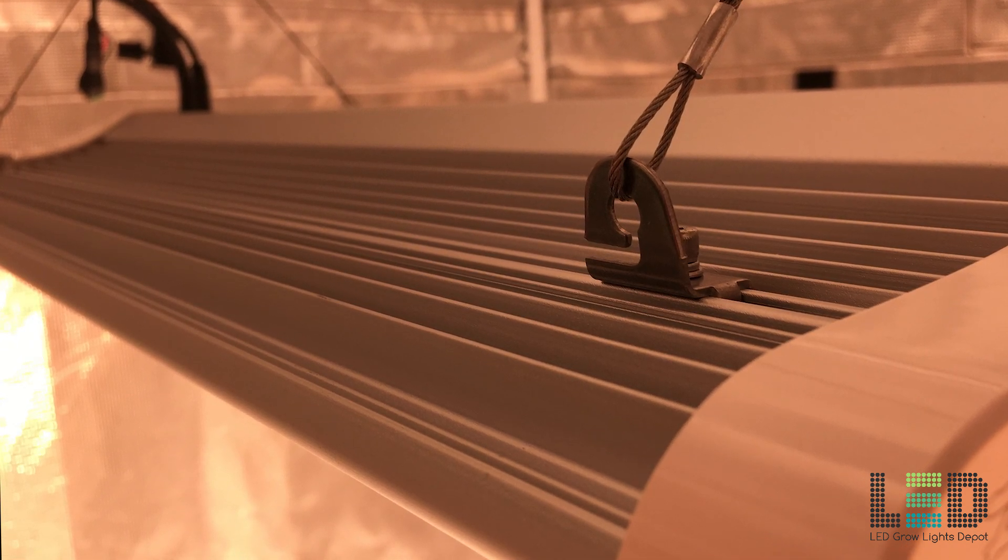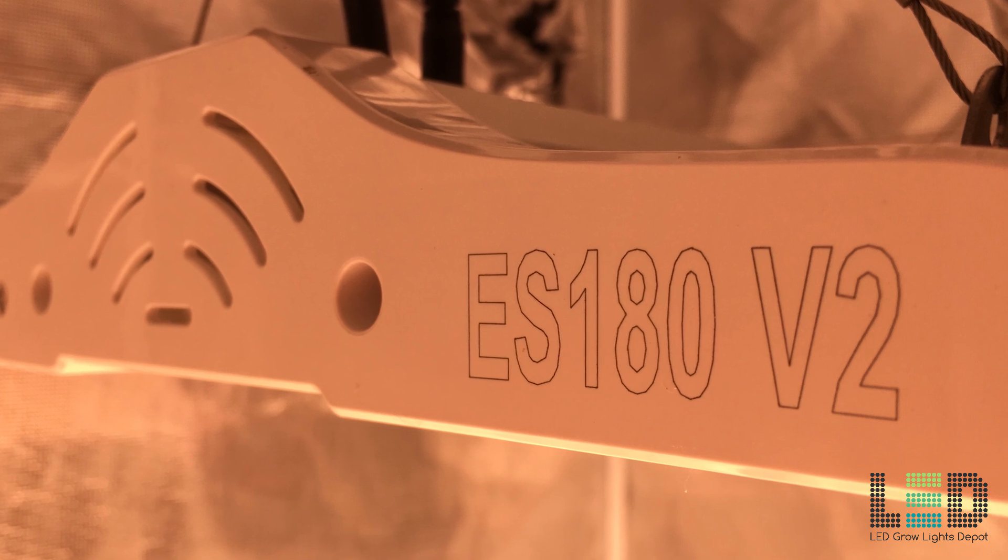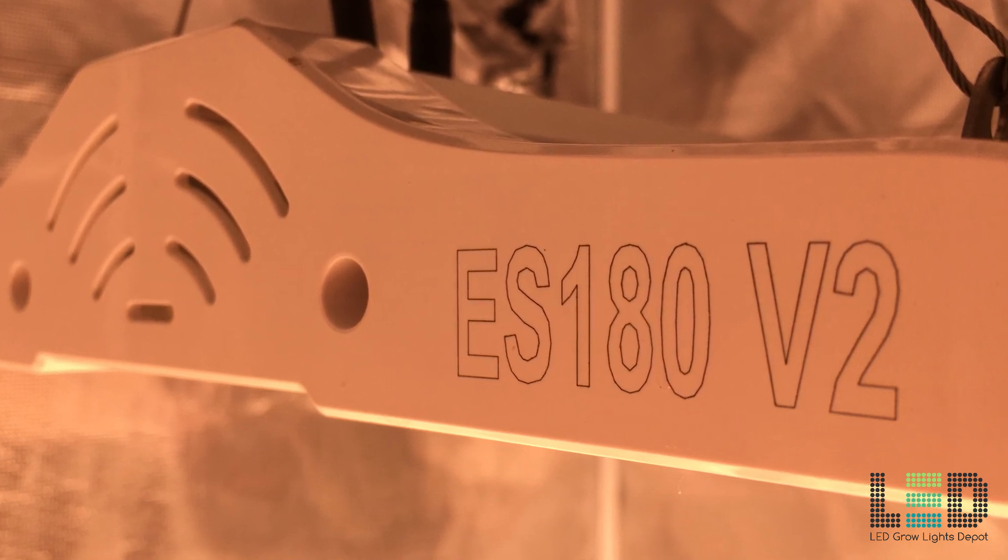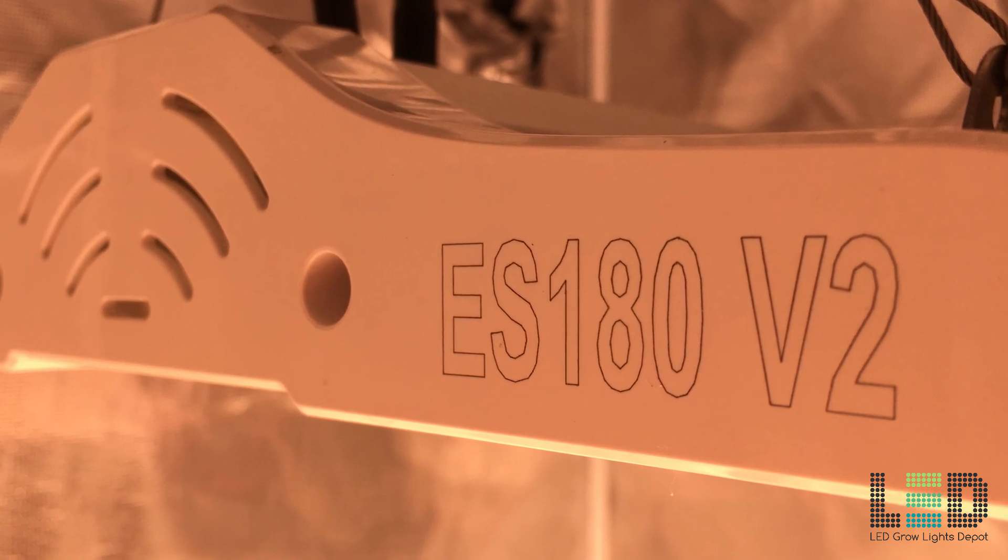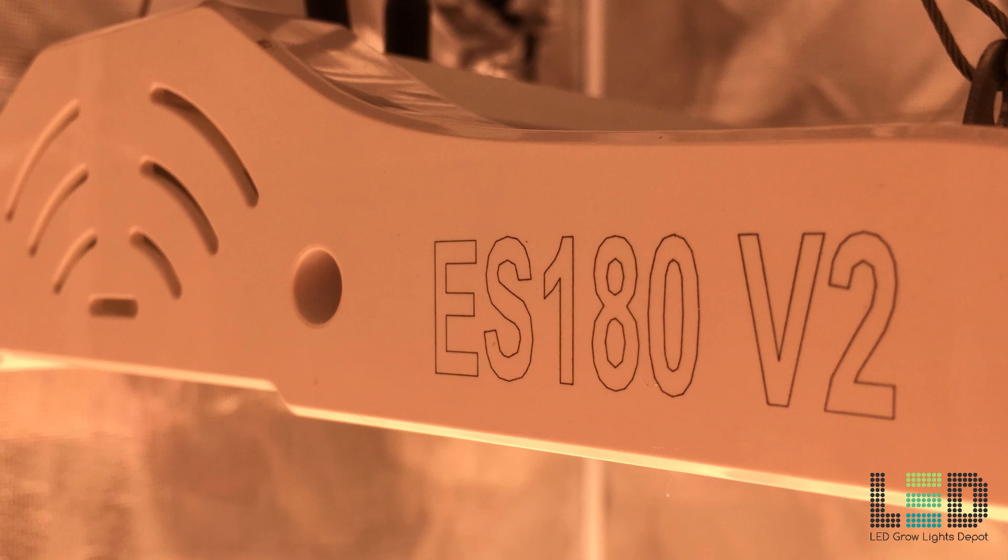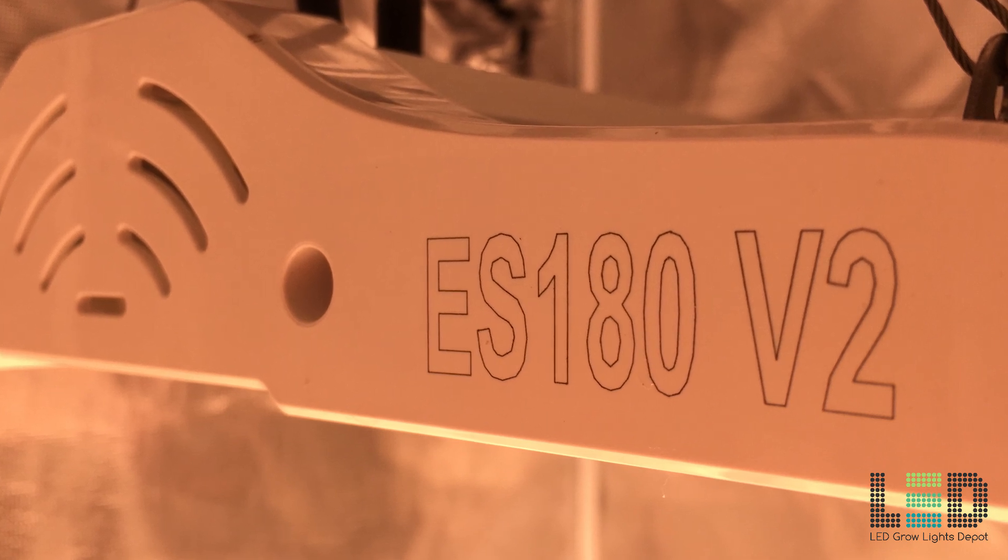Efficacy: Since the chips are more efficient, this bumped up the light output per watt. Light Output: The wattage that the V2 pulls from the wall is the same as the V1, but with more efficient chips, the total light output of the fixture has increased.